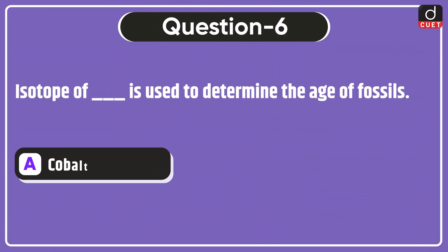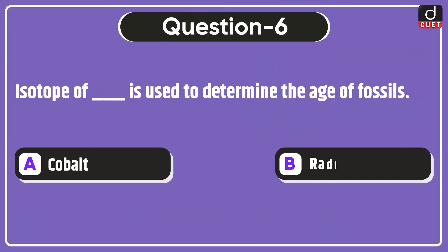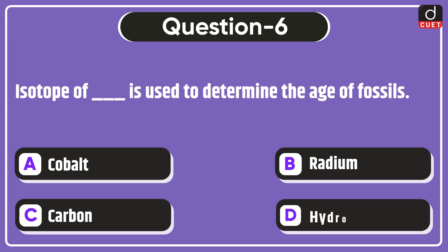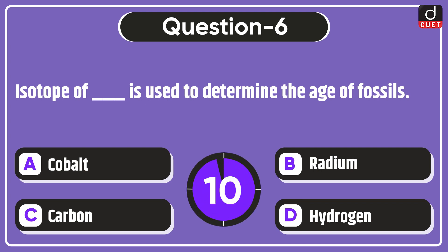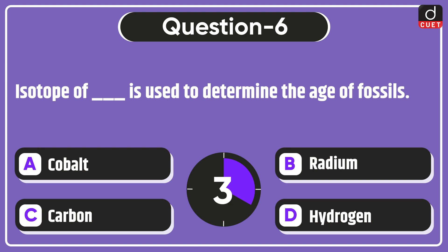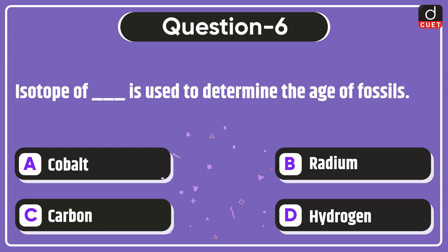Next question: which isotope is used to determine the age of fossils? Cobalt, radium, carbon, or hydrogen? The correct answer is option C — carbon.